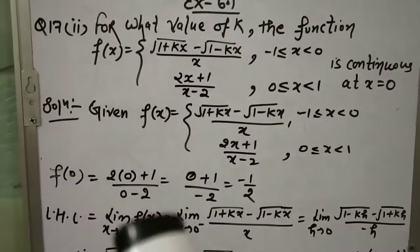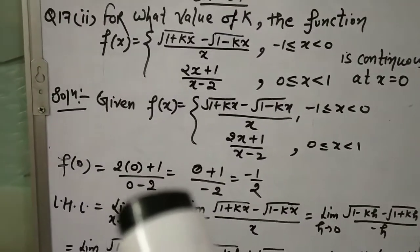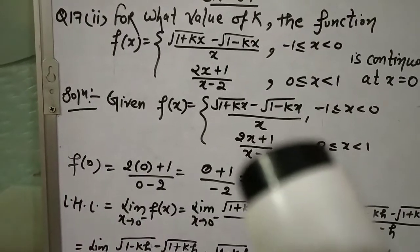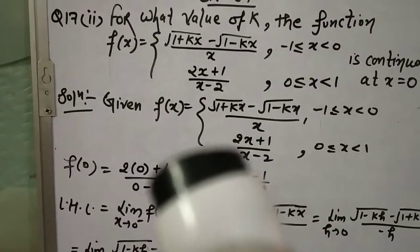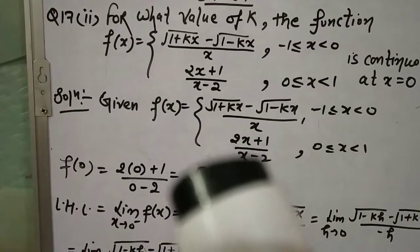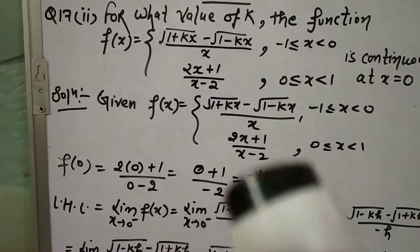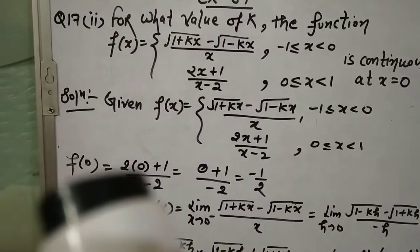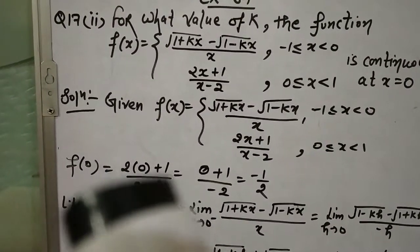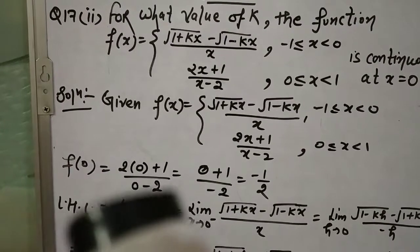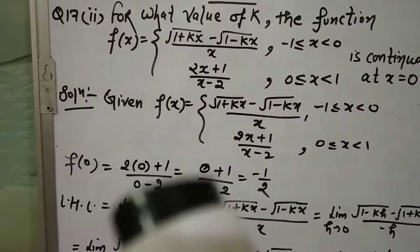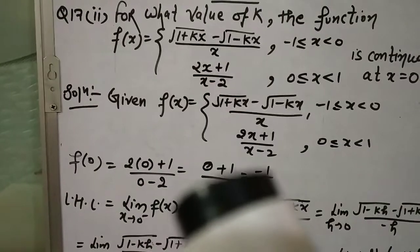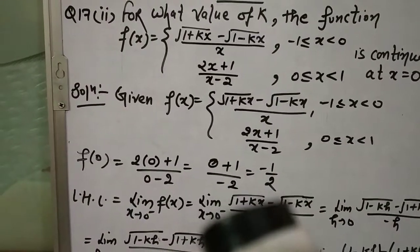Continuous के लिए सबसे पहले f(0) की value निकालनी है। x = 0 पे function (2x+1)/(x-2) वाला लेना पड़ेगा। x = 0 रखा: 2(0)+1 divided by 0-2 = 1/(-2) = -1/2।